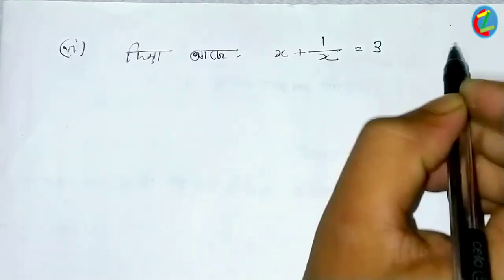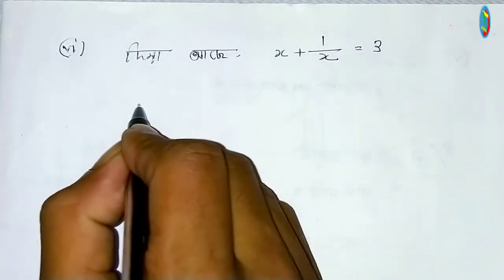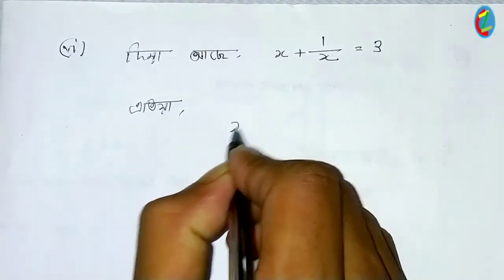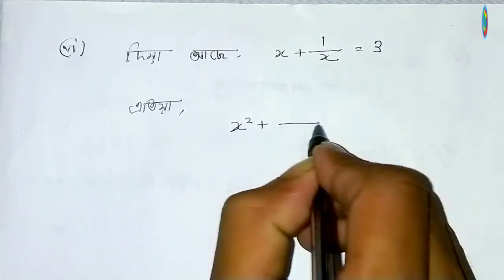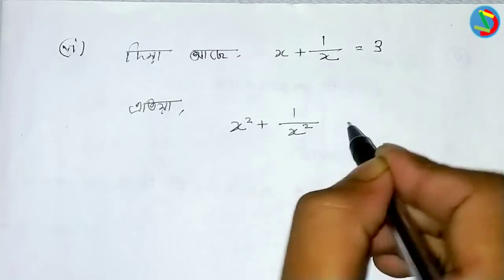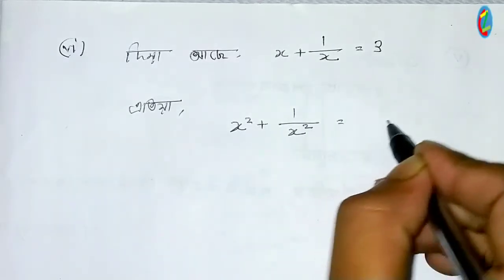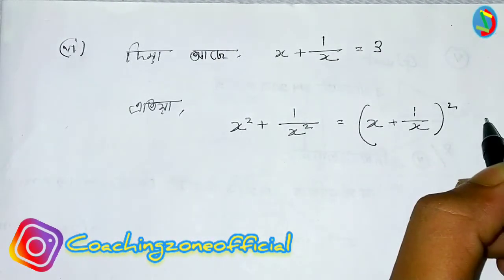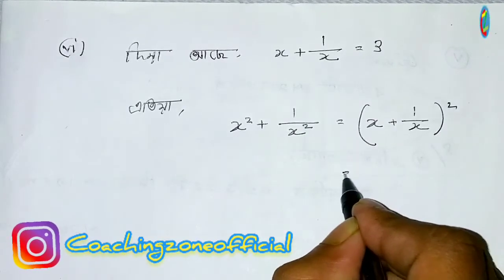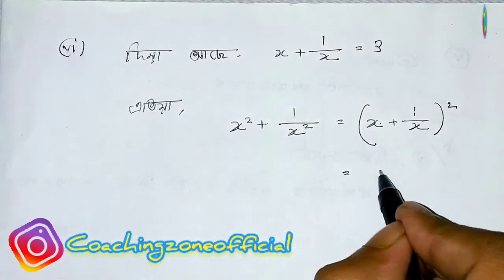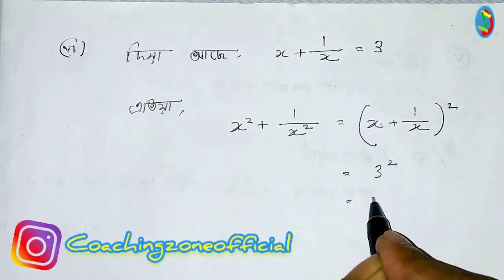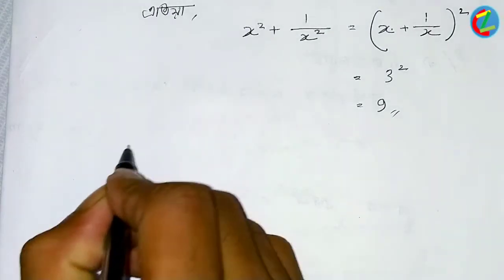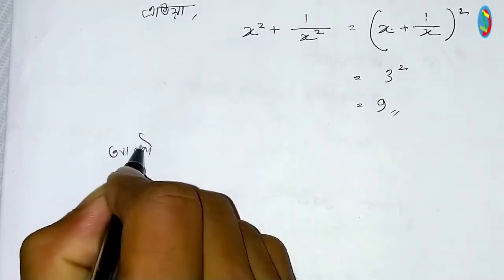The direction of this is x plus 1 by x is equal to 3. So x squared plus 1 by x squared: if we take x plus 1 by x whole square, that gives us x squared plus 1 by x squared plus 2. Since x plus 1 by x equals 3, squaring gives 9, so x squared plus 1 by x squared is equal to 7.